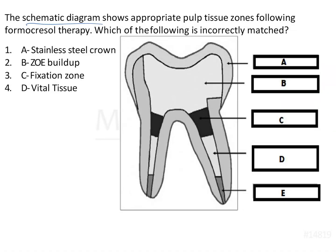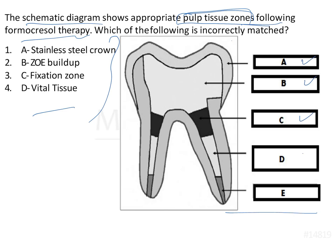The schematic diagram shows appropriate pulp tissue zones specific to formocresol therapy. The given diagram is regarding the pulp tissue zones formed after formocresol pulpotomy therapy. We have to identify which one is not correctly matched — numerics and alphabets are given alongside the respective layer and part of the zone.